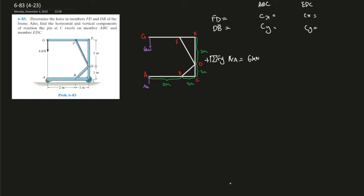Question 83, the 23rd question in the four sets of chapter six, is on frames and machines. This is the frame question — determine the force in members FD and DB of the frame.